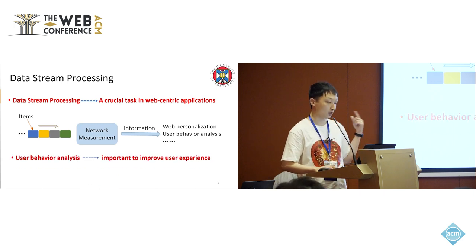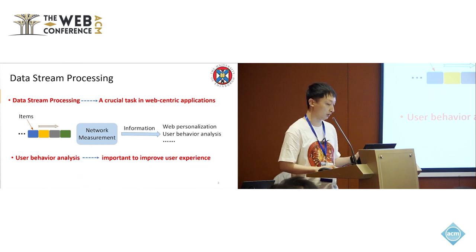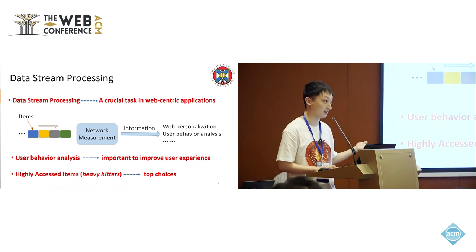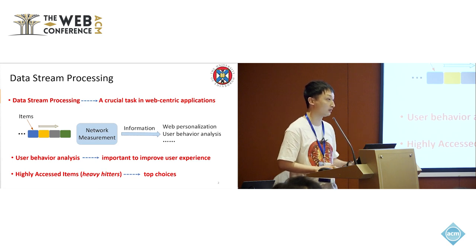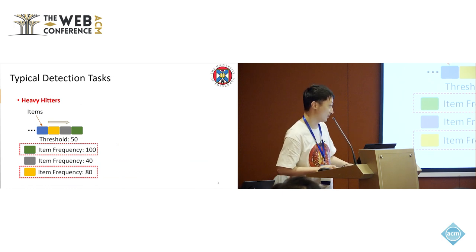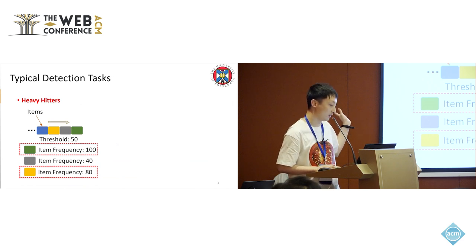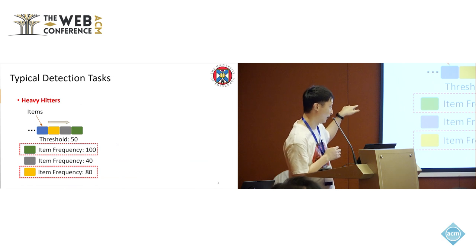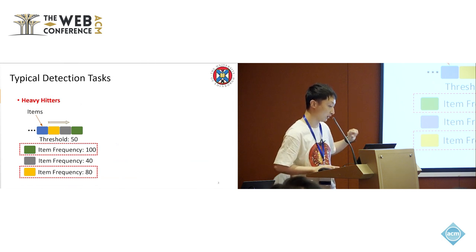User behavior analysis is pretty important to improve user experience. For instance, highly accessible items, which we can consider as heavy hitters, usually mean the top choices by the user. To give an informal example: given several items where each item can occur several times, if we set a threshold of 50 and an item's frequency is 100, it exceeds 50, so we consider this item a heavy hitter.